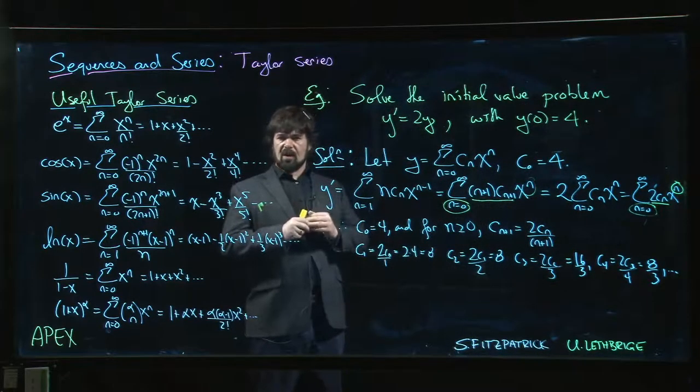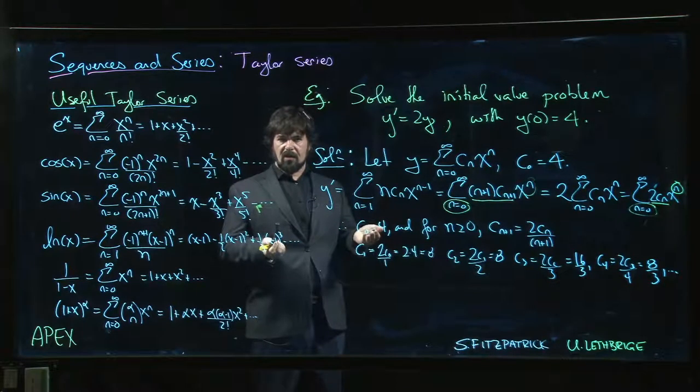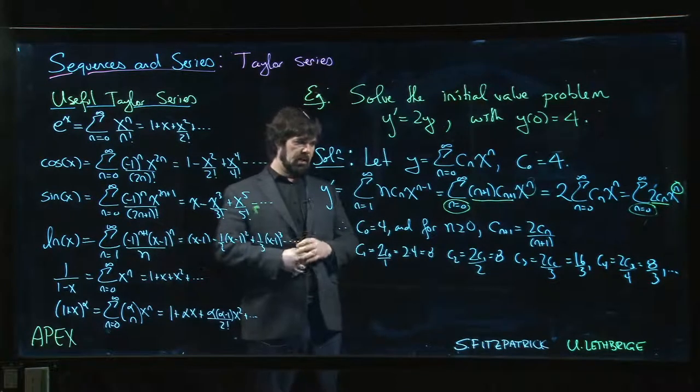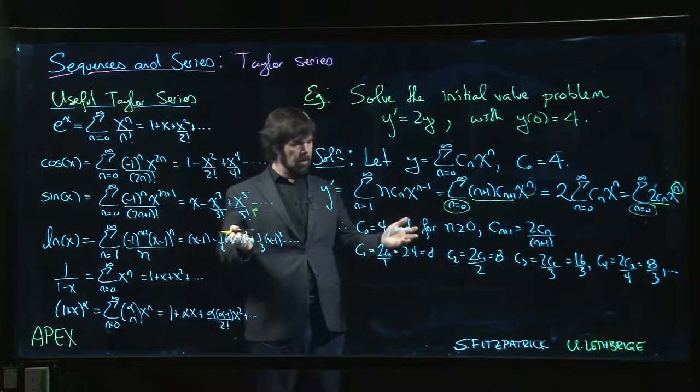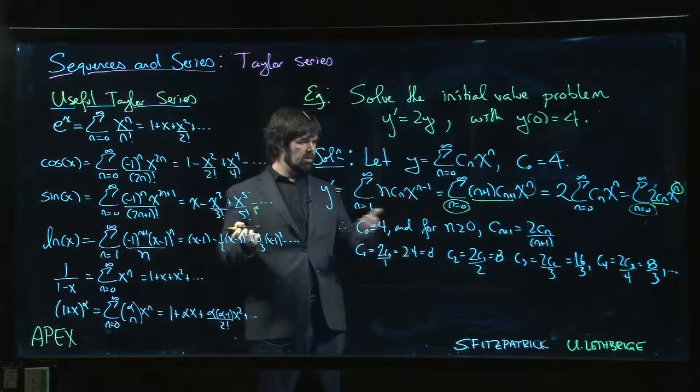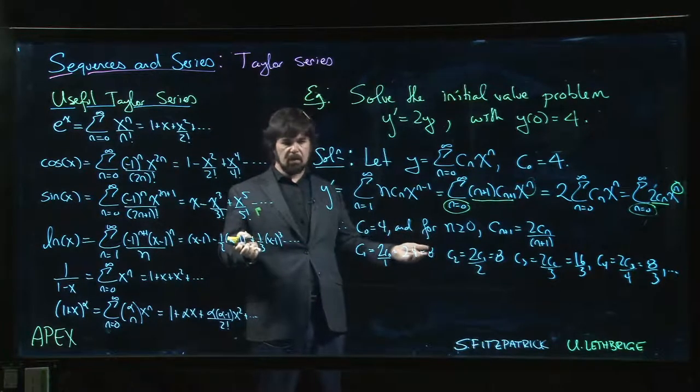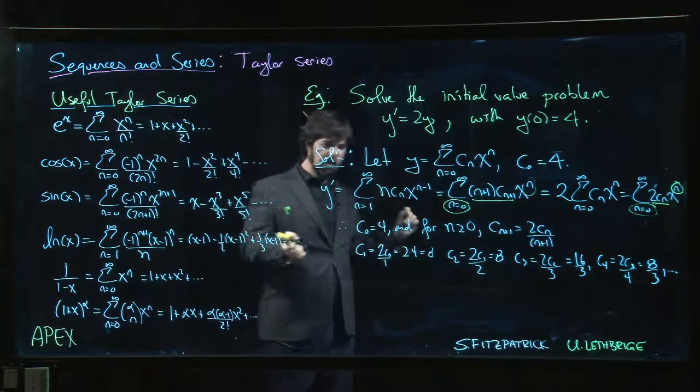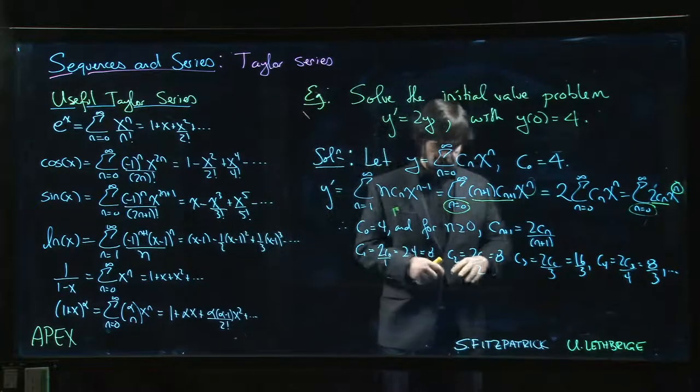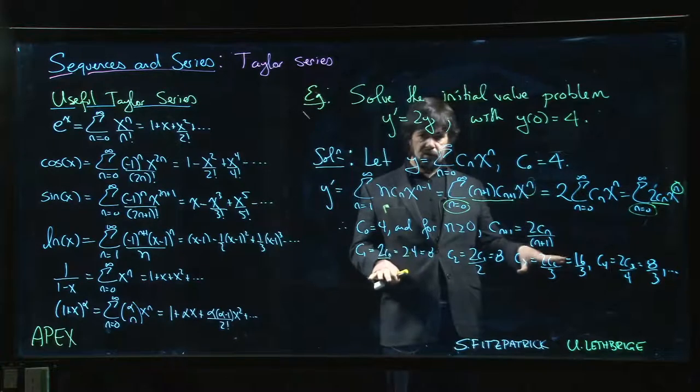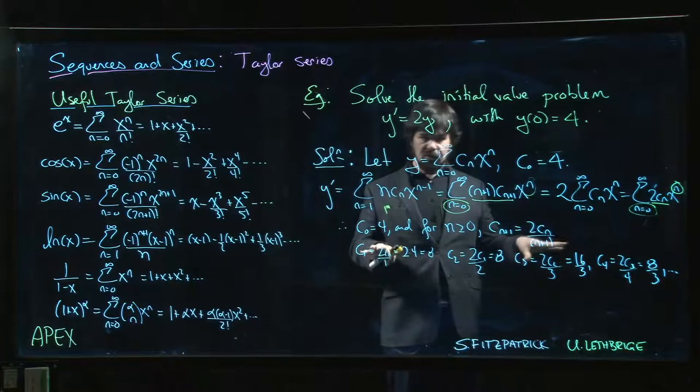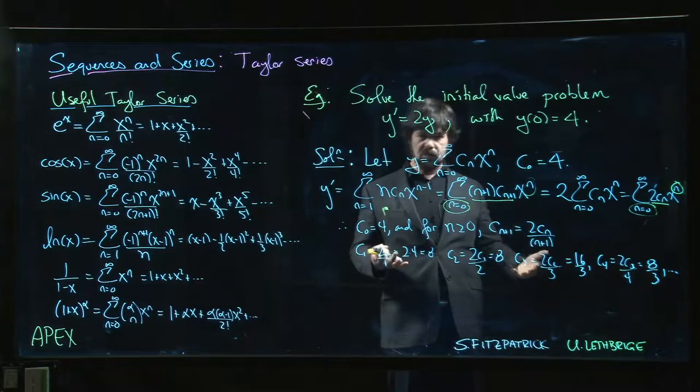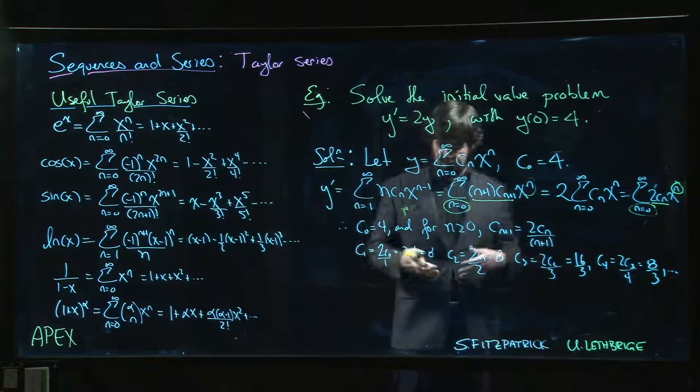But maybe we're not so satisfied with that. We'd like to actually identify this function if we can, based on what we know about Taylor series, Maclaurin series. This doesn't seem to be jumping out at us, but maybe the mistake that we made is we've reduced our patterns, our fractions. We've seen this before. We're looking for patterns in sequences. If you reduce your fractions, you can't see those patterns anymore.